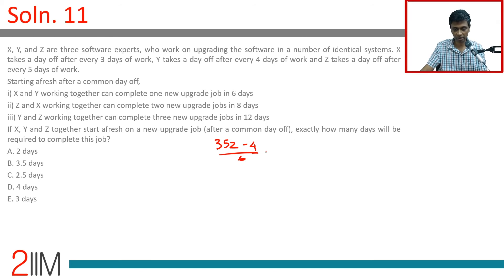5 X plus 5 Y is 1. So 35 Z minus 4 by 6, plus 10 Z minus 1 by 2 equals 1. Or 35 Z minus 4 plus 30 Z minus 3 equals 6.